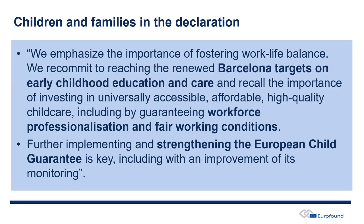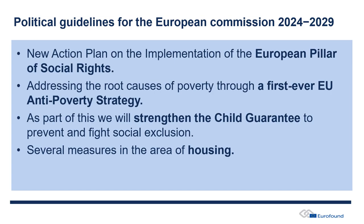There is also a commitment to strengthen and ensure the implementation of the European Child Guarantee — the key policy at the EU level when it comes to tackling child poverty, set out in 2021. Implementation has been delayed; some countries only put national action plans in place much later than scheduled. So there's a commitment here to ensure this policy works at both EU and national level, with emphasis on making the monitoring of the guarantee as holistic as possible.